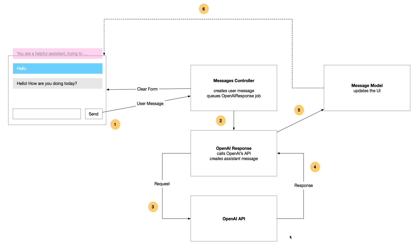Let's look at this right side here, which is what happens behind the scenes. You put in some text in the input and click send. The form gets sent to the messages controller, and the messages controller creates a new user message — this blue message here. Then it calls this OpenAI response class, which is a background job that calls the OpenAI API. In this request, it sends all the messages it's got: the system prompt set up behind the scenes and the newly created user message — so two messages sent to the OpenAI server. The OpenAI server then responds with an assistant message.